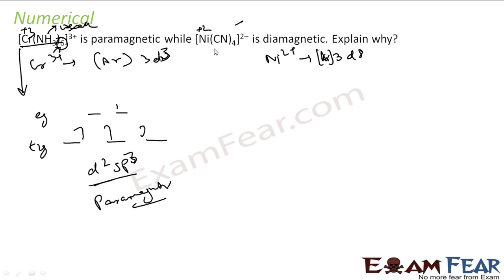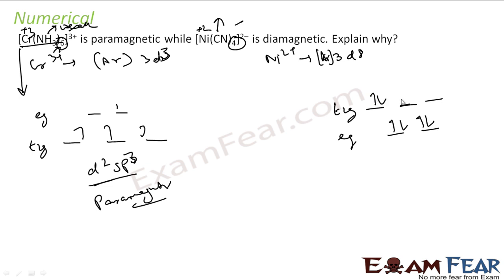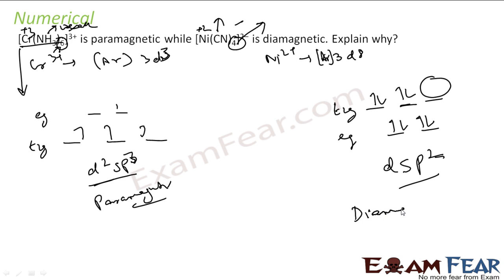For Ni(CN)₄²⁻, the coordination number is 4 — tetrahedral splitting applies. CN⁻ is a strong field ligand, so it forces pairing. Filling 8 electrons with pairing: the hybridization is dsp², using one d orbital, one s, and two p orbitals for 4 electron pairs. This gives a diamagnetic complex due to complete pairing.